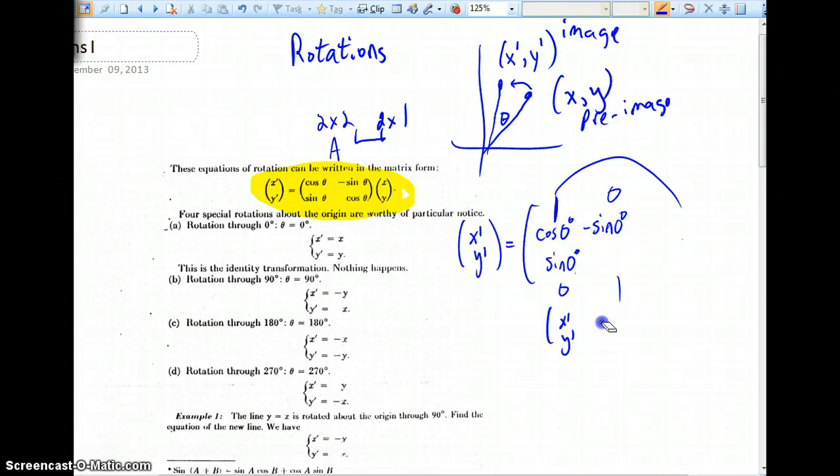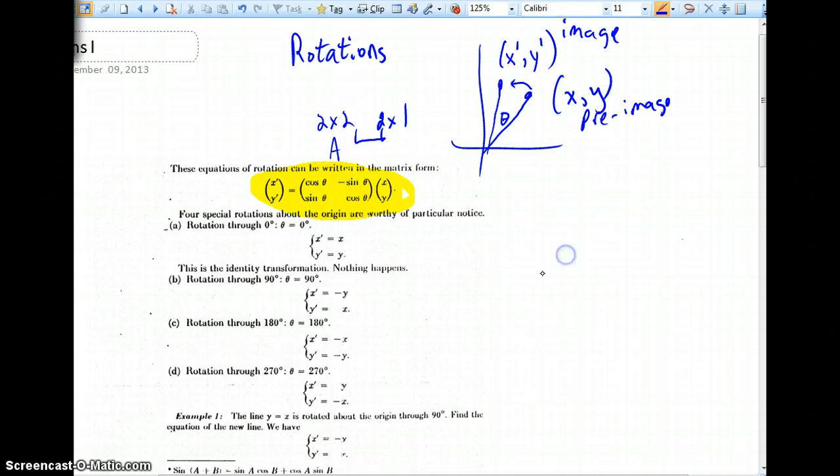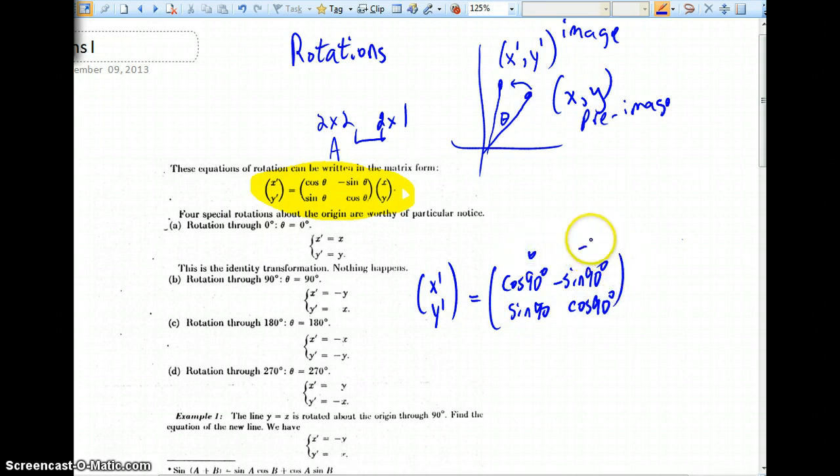By way of comparison, if we were to multiply by 90 degrees, that's quite a bit different. Here is x prime y prime. This is the cosine of 90 degrees, opposite sine of 90 degrees. Here's sine of 90 degrees, cosine of 90 degrees. Cosine of 90 is zero, sine of 90 is one. This would become negative one. Down here is a one, over here is a zero.